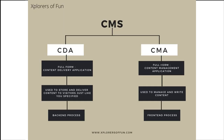Now let us discuss how a CMS works. CMS is divided into two parts: CMA and CDA. CMA stands for Content Management Application. It helps you write and manage your content easily and it is a front-end process. CDA stands for Content Delivery Application. They store your content in databases and then show them to visitors just as you specified. They happen in the background of your website without you knowing. Together, CDA plus CMA form the CMS.